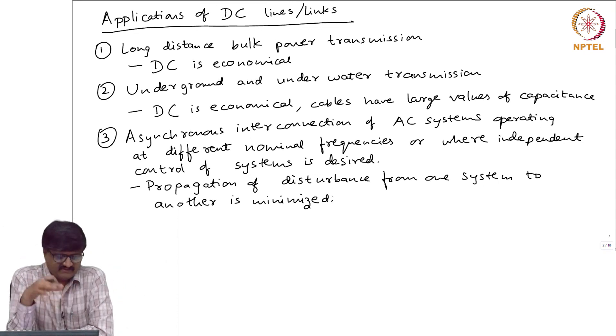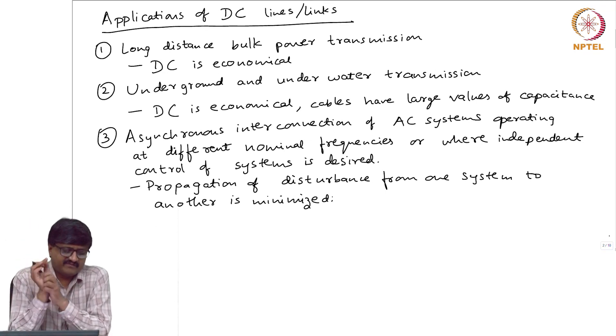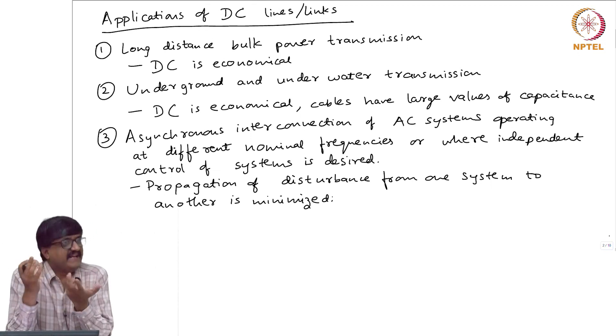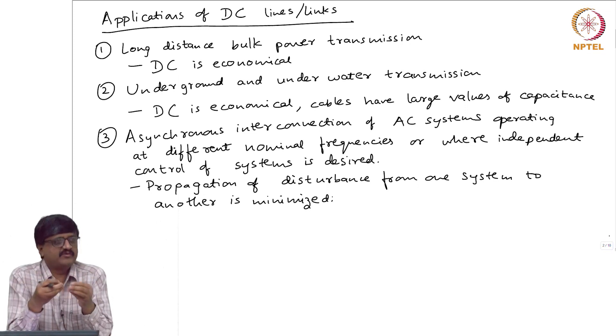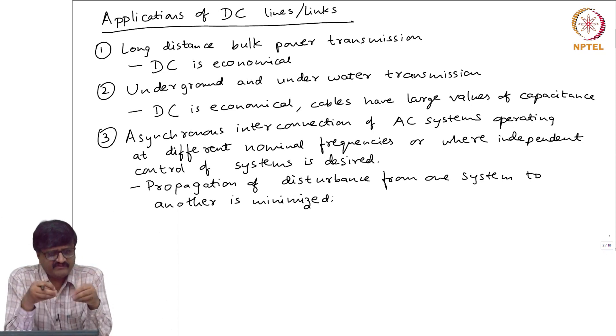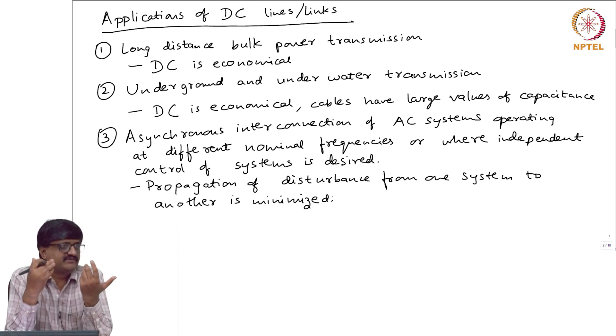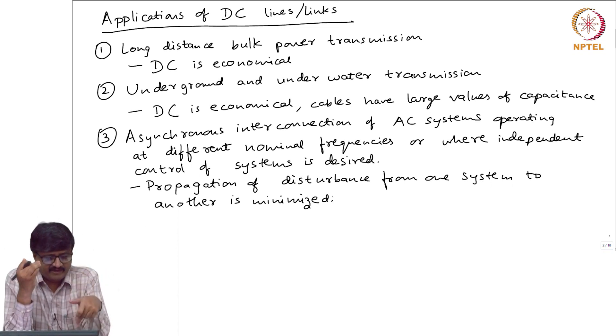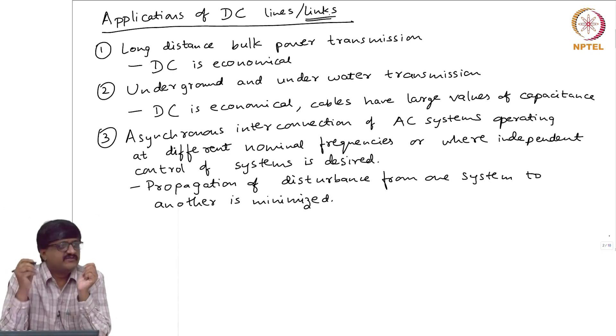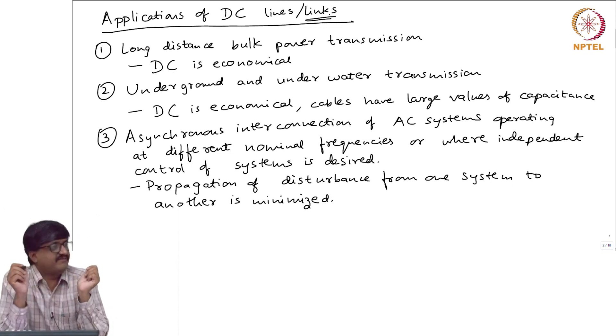When you look at application one or application two, there is a transmission line, whereas when it comes to application three, many times we do not need a line. I just want to somehow interconnect. I have two points close together. When we want to interconnect two systems and you have two nearby points, you can just as well have a link, we do not need a line. In application number three, this link comes into picture. DC link can come into picture in the case of application three.